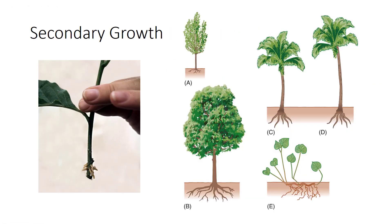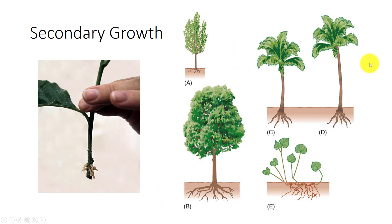Many eudicots undergo secondary growth. This increases the amount of wood — xylem — in both the trunk and the roots, allowing more leaves to grow and a more extensive root system. Most monocots cannot undergo secondary growth. After the stem is formed, their conducting capacity cannot be increased, as you can see with this younger and older palm. An ever-increasing taproot system would not work here.